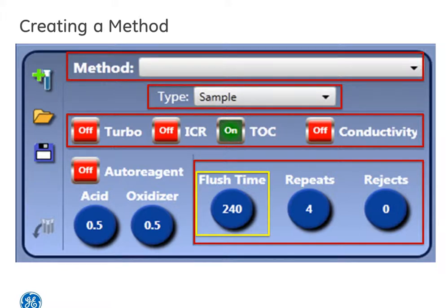Here, users can select minimum flush times. The minimum for the M9 series is 240 seconds. Also on the right side, you will notice that you can set up to zero rejects. This is much different than DataPro.